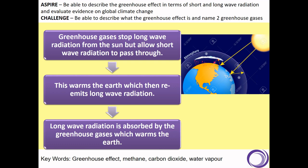For a long time, this kept the earth's surface temperature reasonable and within a pretty constant range. However, due to human impact on the atmosphere and the increased amount of carbon dioxide in the atmosphere, more longwave radiation is now being absorbed, which has led to global warming.